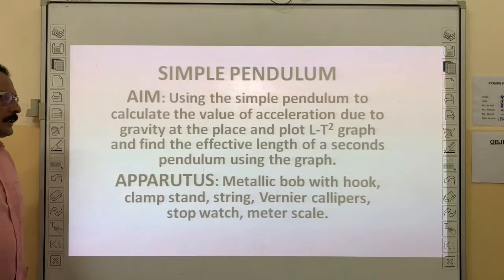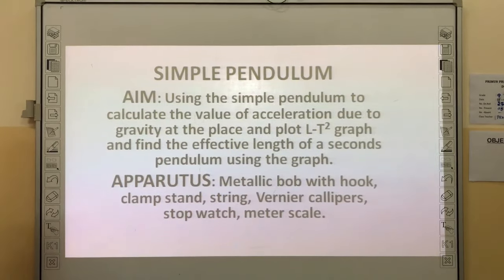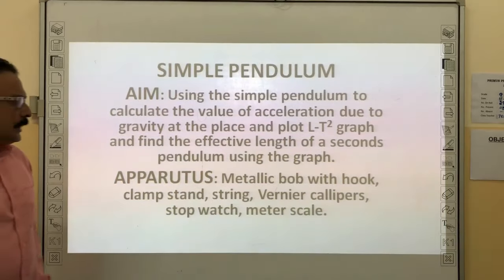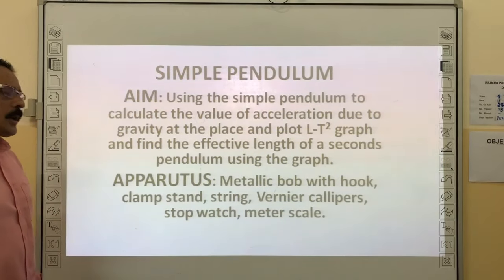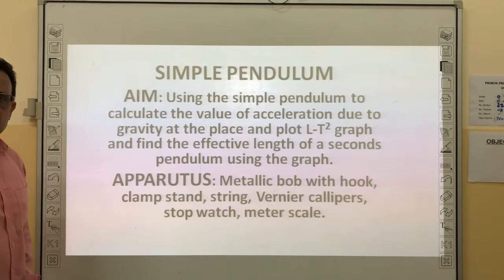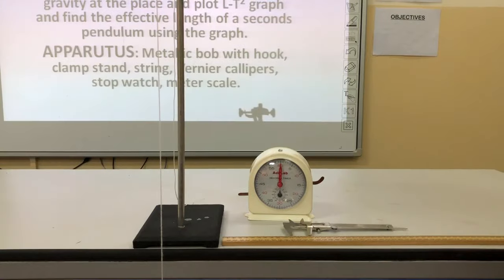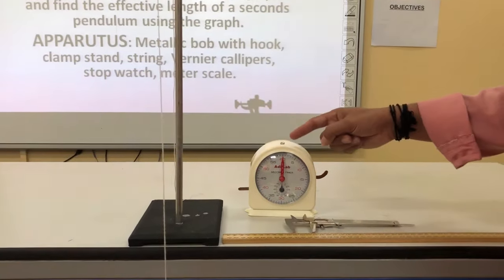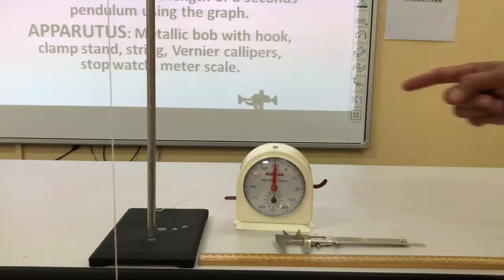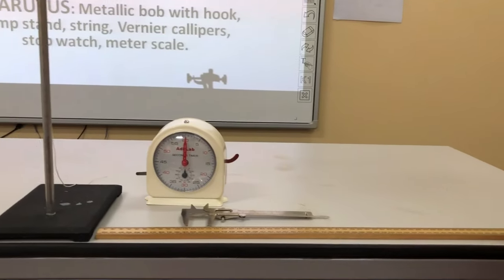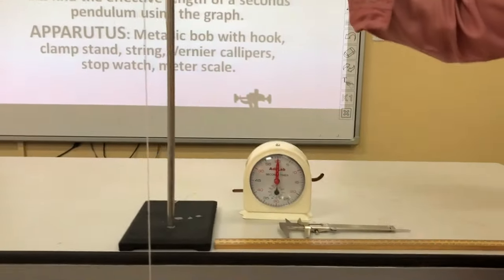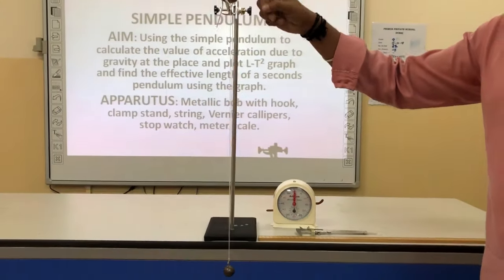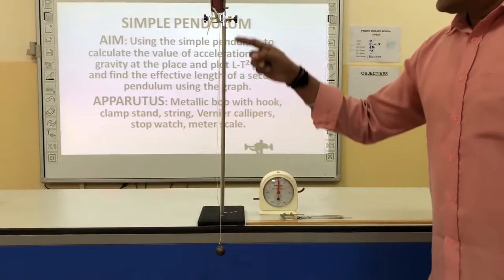The apparatus needed are a metallic bob with a hook, a clamp stand, string, vernier calipers, a stopwatch, and a meter scale. A retort stand or clamp stand is used to suspend the simple pendulum.